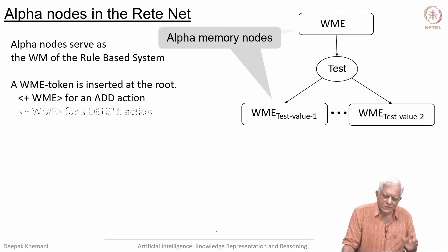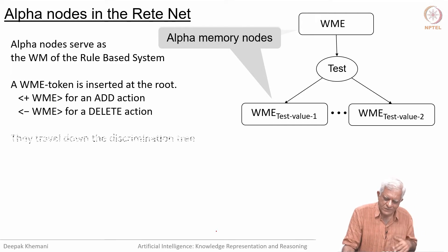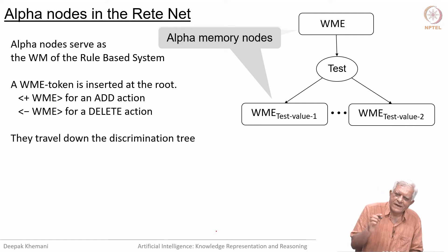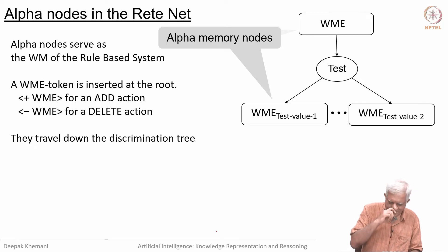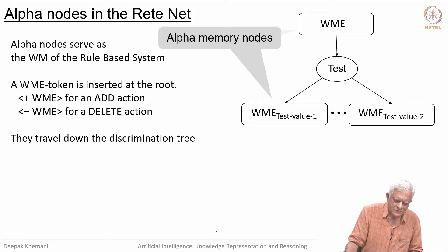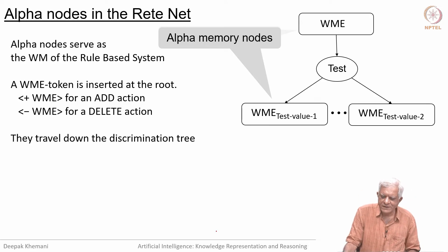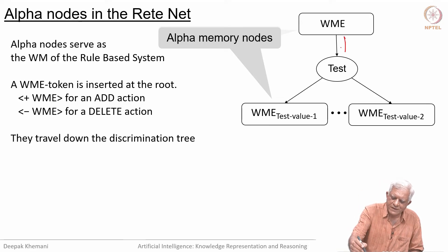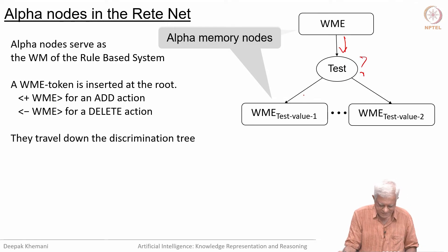A working memory token is inserted at the root of this network. If the action was to make a working memory element, then we would add a positive token. If the action was delete, then it would be a negative token — sometimes we use 'add' instead of 'make'. Then it traverses down the network: you put in a working memory element, it does some test, and based on the value of the test it goes down one of the paths.